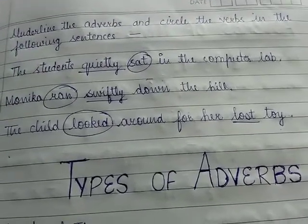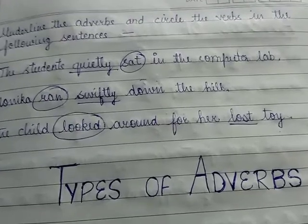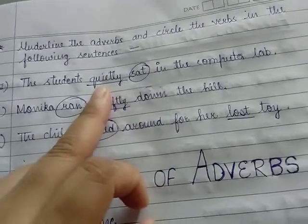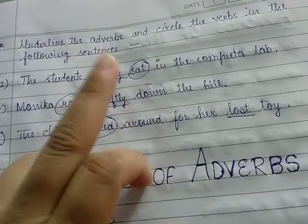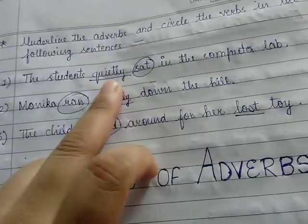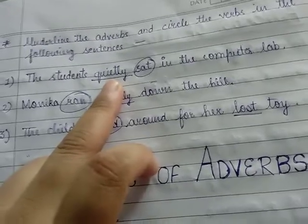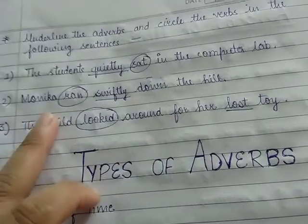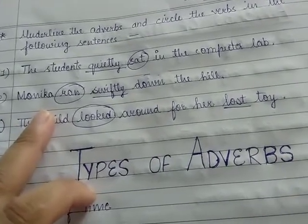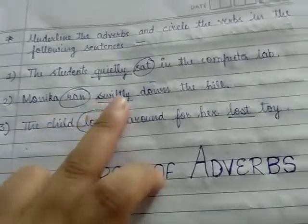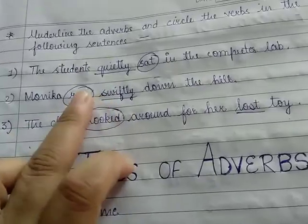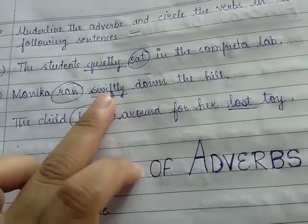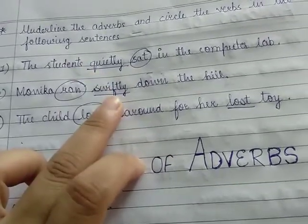First: the students quietly sat in the computer lab. So here, 'sat' is a verb and 'quietly' — यानि चुप-चाप जो बैठने की विशेषता बता रहा है कि वो चुप-चाप बैठे — is an adverb. Next: Monica ran swiftly down the hall. Monica ran यानि भाग रही है, verb. 'Swiftly' is telling कि वो कैसे भाग रही है, so it is an adverb.